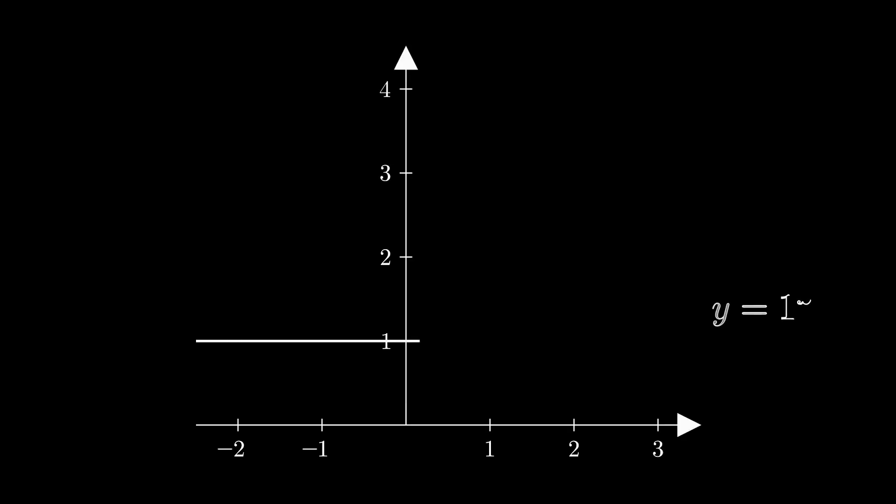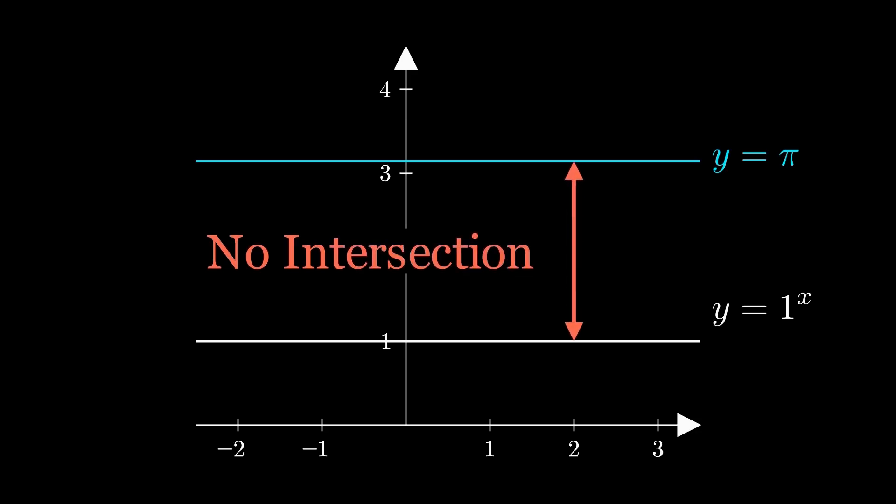Look at this, 1 to the x is just 1, a perfectly flat line, and here's y equals π. Another flat line, higher up, they never touch, so the equation 1 to the x equals π feels impossible.